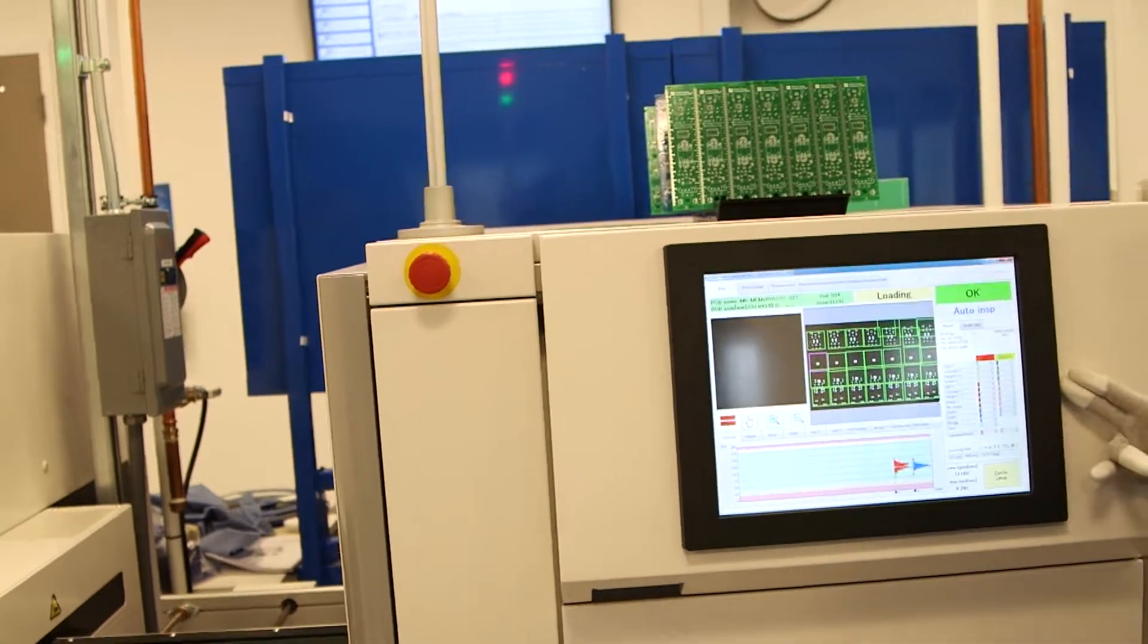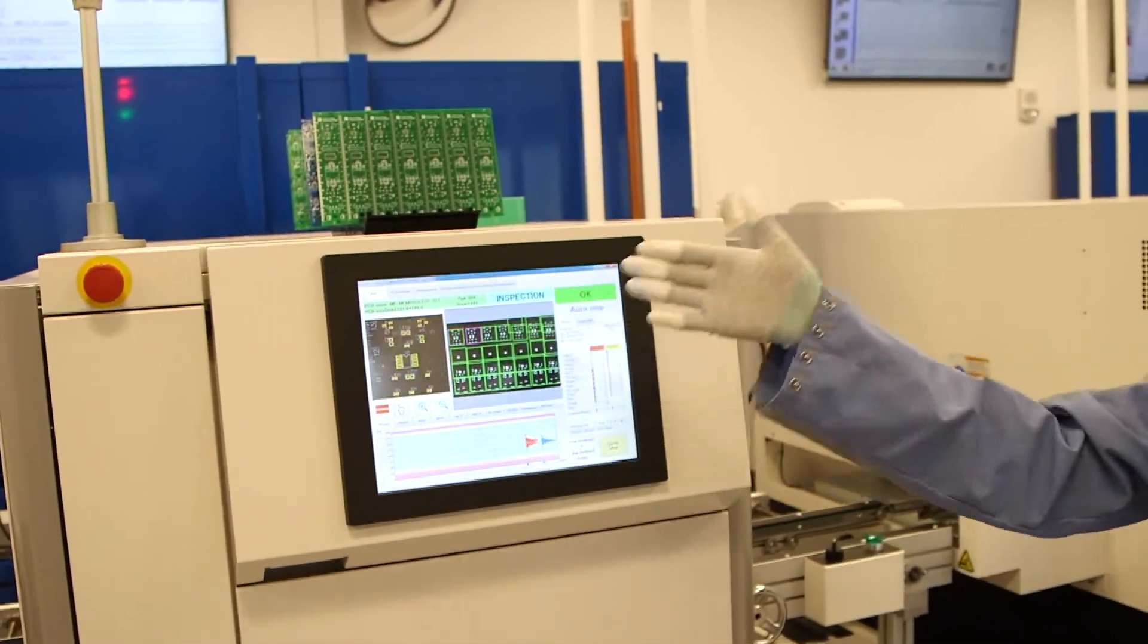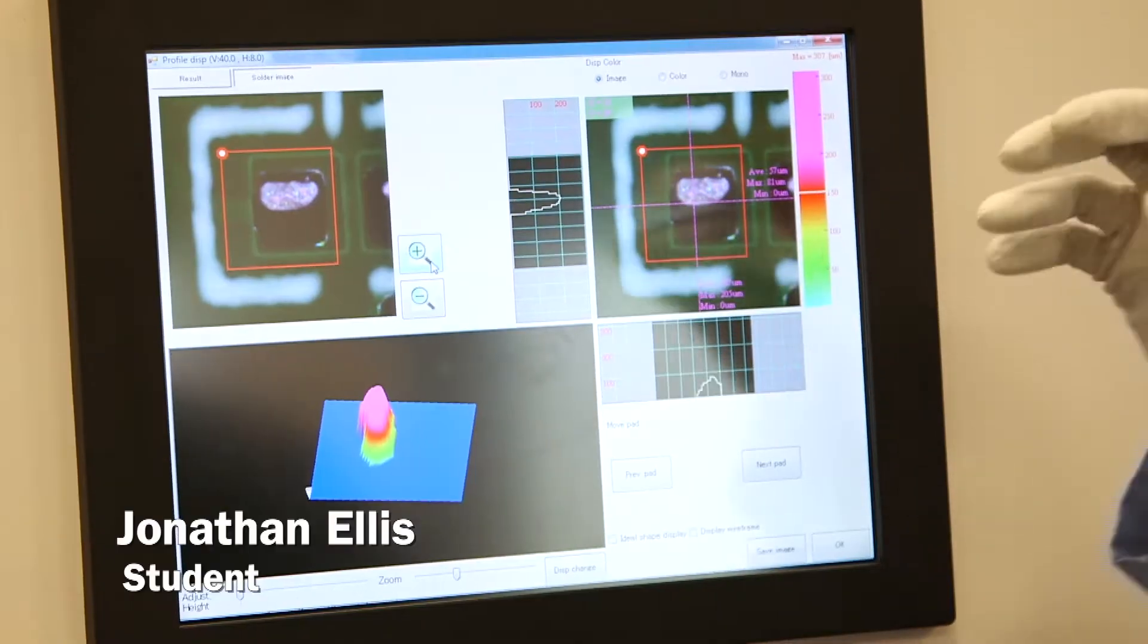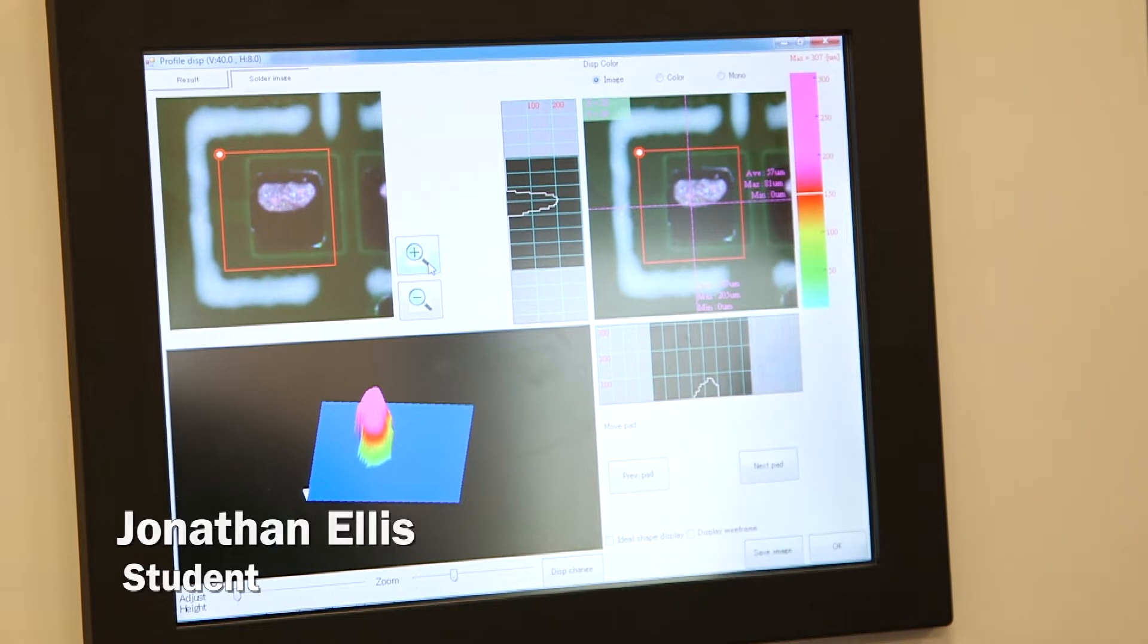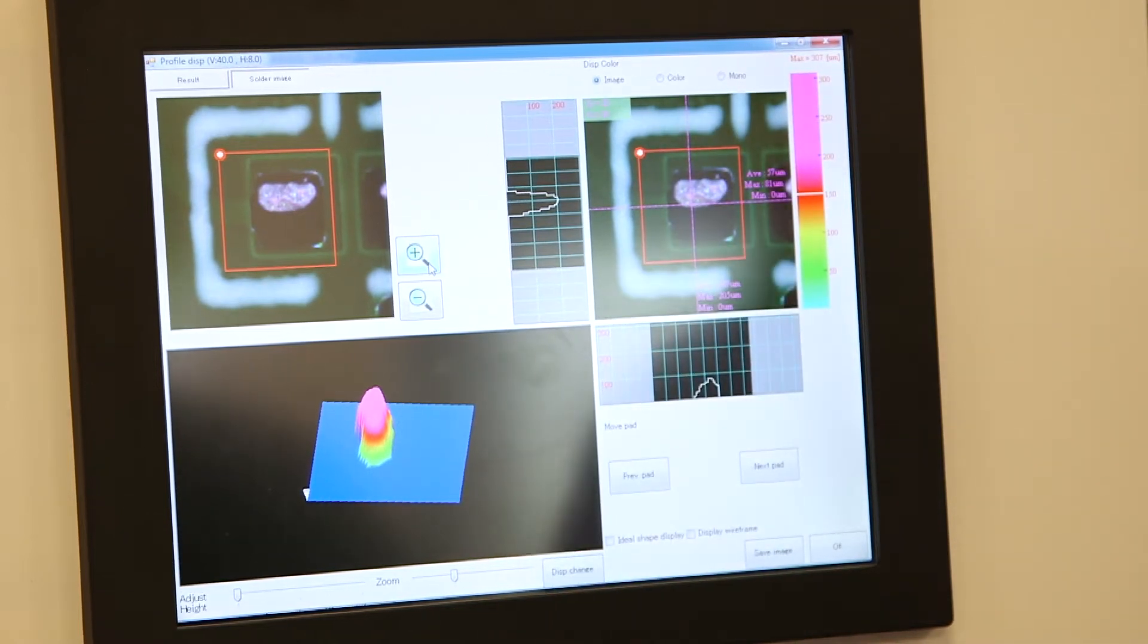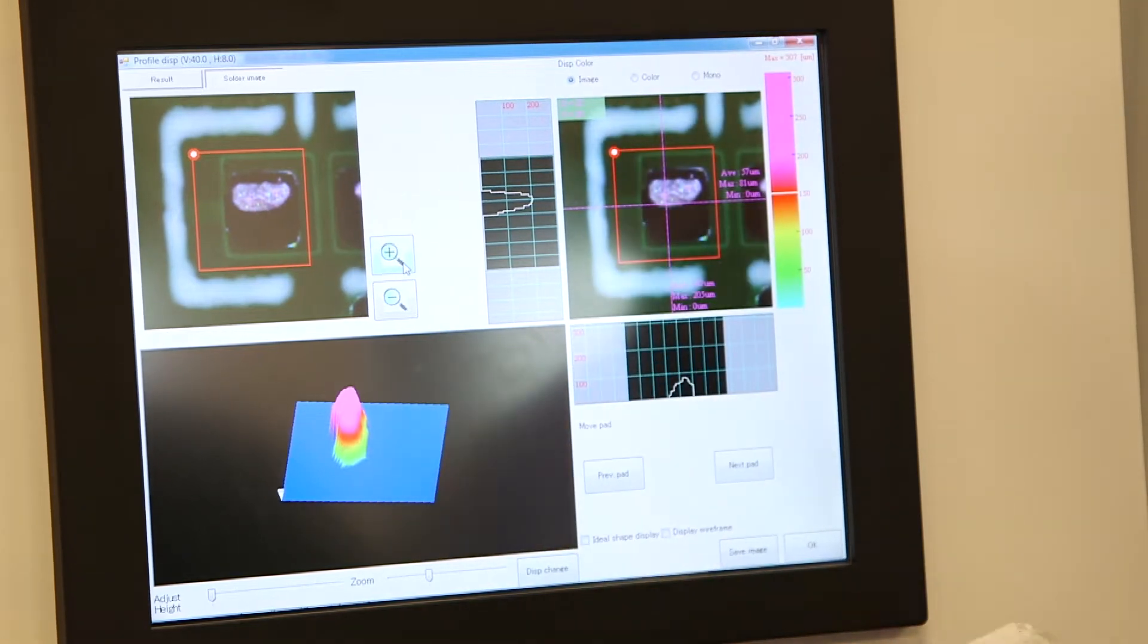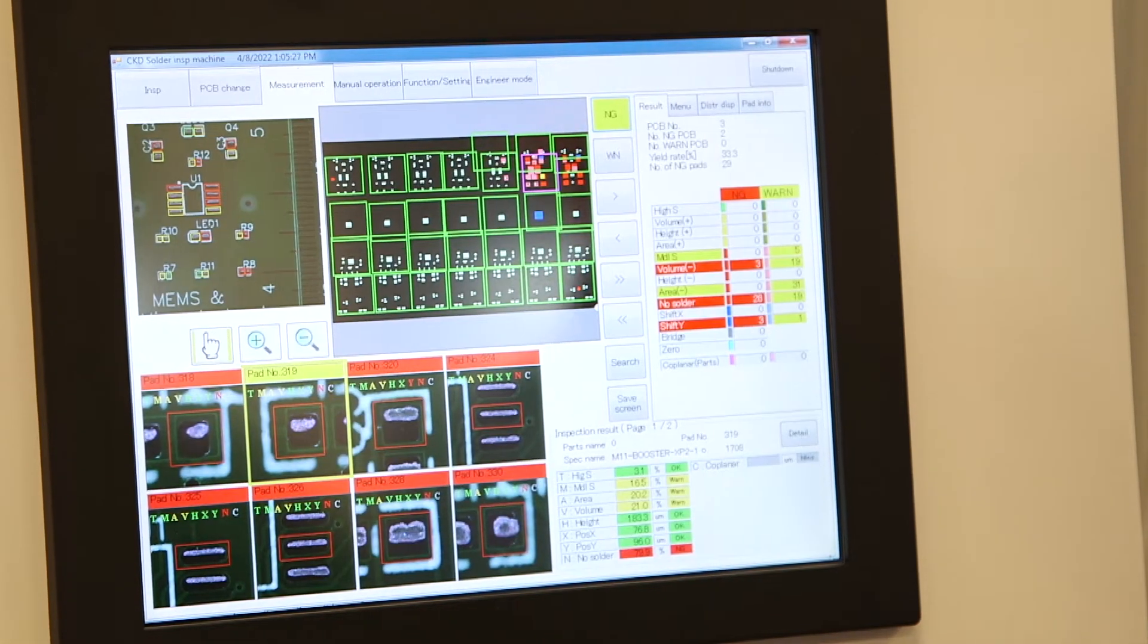So this is the SPI machine. Stands for Stenciled Print Inspection. So this has been pre-programmed with all the tolerances and recommendations that you want to have on this pad. So it's inspecting these pads to see if it has the right amount of volume on it. Is it even there? Is it smeared? This is probably the most critical machine in this whole line, as far as production goes.